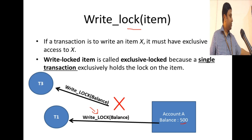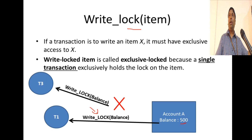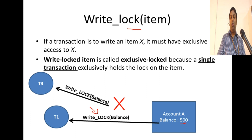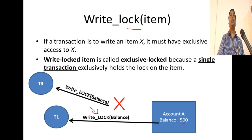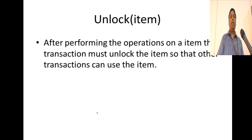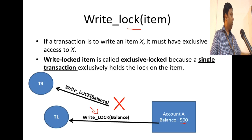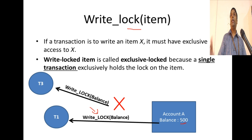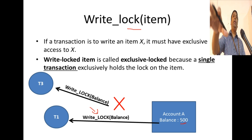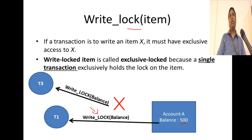Until transaction T1 finishes and unlocks that item, the other transaction should wait. That is the concept of locking. You have seen two types of locks: read locks and write locks. There is one more thing to understand — unlocking an item. After transaction T1 finishes its work with account A, it should unlock the item so that other transactions that are waiting can acquire the locks on the item.